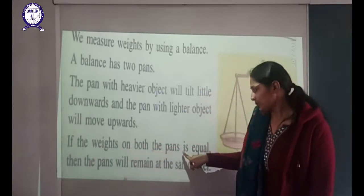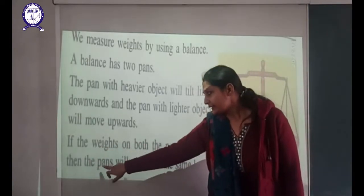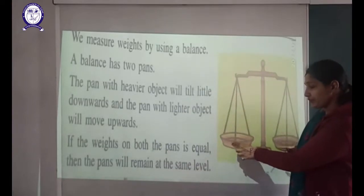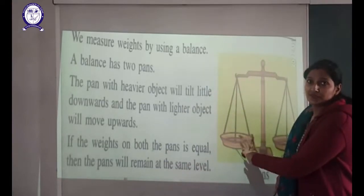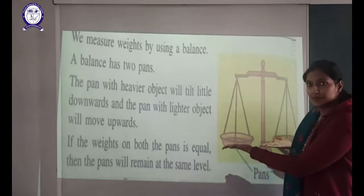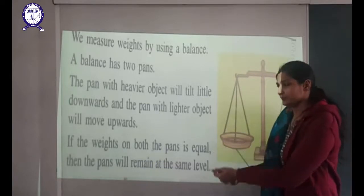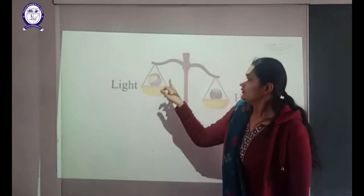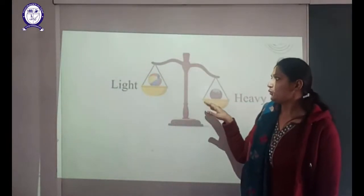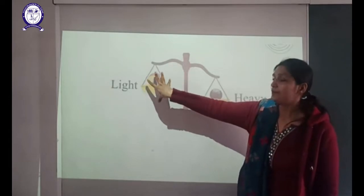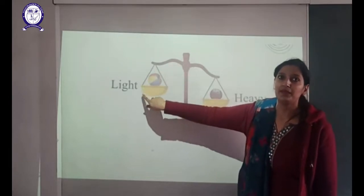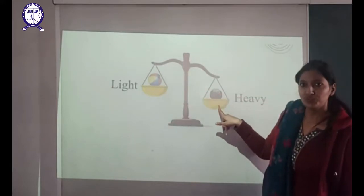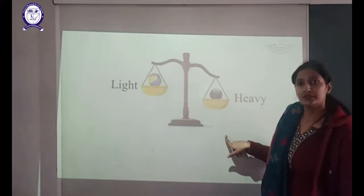If the weight on both pans is equal, the pans will remain at the same level. When we keep a light object, the pan moves upward, and when we keep a heavy object, it goes downwards.